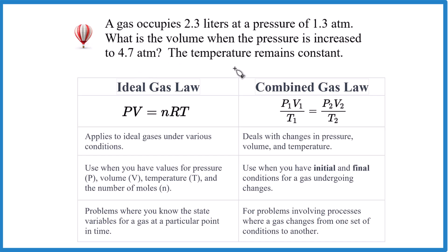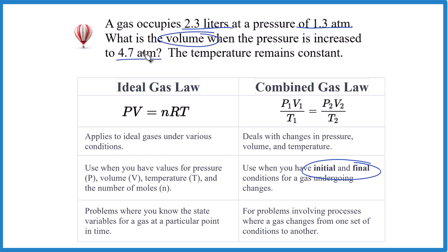You're looking for initial and final conditions. In this problem we start out with 2.3 liters and a pressure of 1.3 atm. They ask us what is the volume when the pressure is increased to 4.7 atm. So the pressure changed — we have an initial pressure and then a final. So we're going to use the combined gas law.